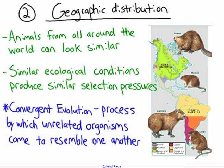The last concept here is convergent evolution — the process by which unrelated organisms, like the capybara, the beaver, and the muskrat, come to resemble one another because of their environment. This has been a Bit of Biology with Mr. Rock — signing off.